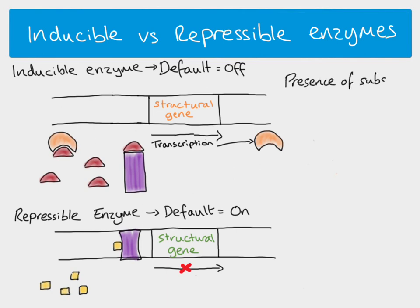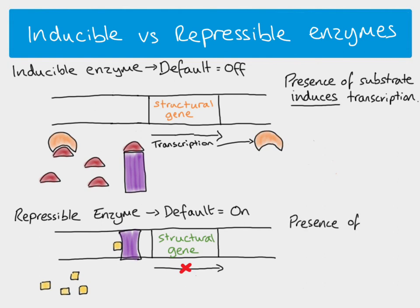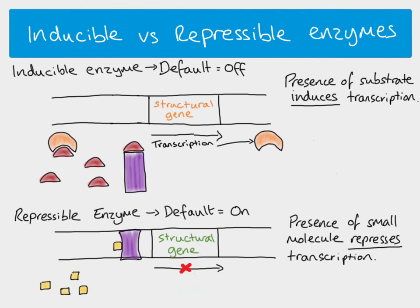To summarize: with an inducible enzyme, the presence of the substrate induces transcription — transcription happens and we get our enzyme; if there is no substrate, there is no transcription and no enzyme. With a repressible enzyme, the presence of a small effector molecule represses or prevents transcription — the repressor protein binds and the structural gene is not transcribed. If that molecule is not present, the repressor doesn't bind and we do get our enzyme produced.